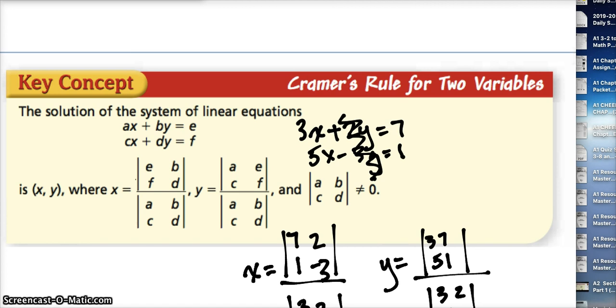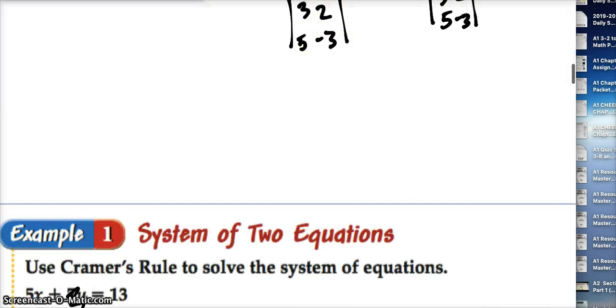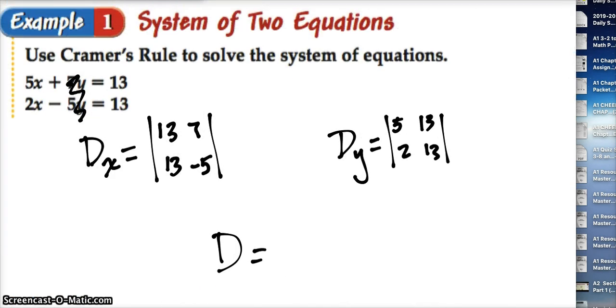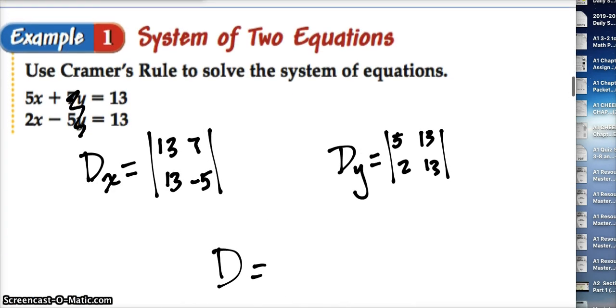To figure out what the numerator of the y answer would be, or that determinant, I'm going to do the same thing. But instead I'm going to get rid of the y's and put it down exactly as I see it: 5, 2, and then 13, 13. I see that I've done a good job—A, C, E, F. I'm trying to memorize it and I need you to try to memorize it too.